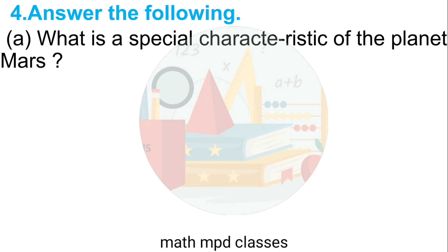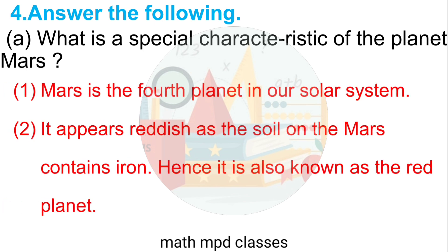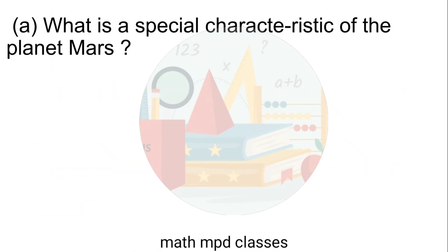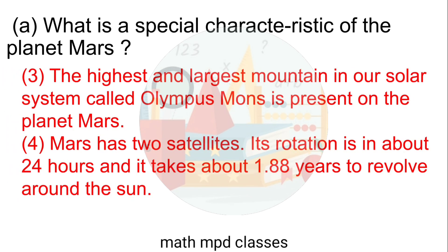Question No. 4. Answer the following. A. What is a special characteristic of the planet Mars? Answer: Mars is the fourth planet in our solar system. It appears reddish as the soil on Mars contains iron; hence it is also known as the Red Planet. The highest and largest mountain in our solar system, called Olympus Mons, is present on the planet Mars.